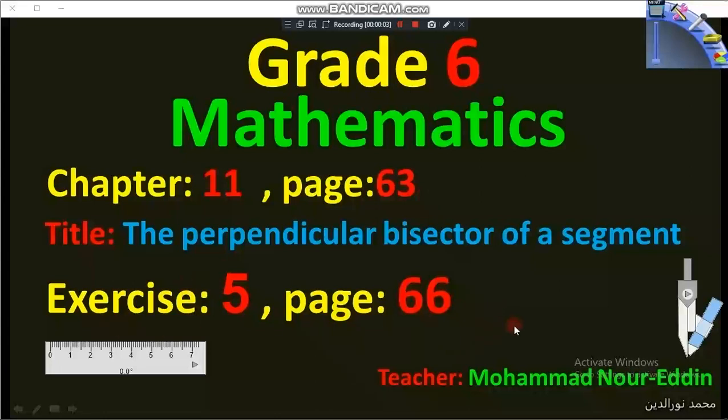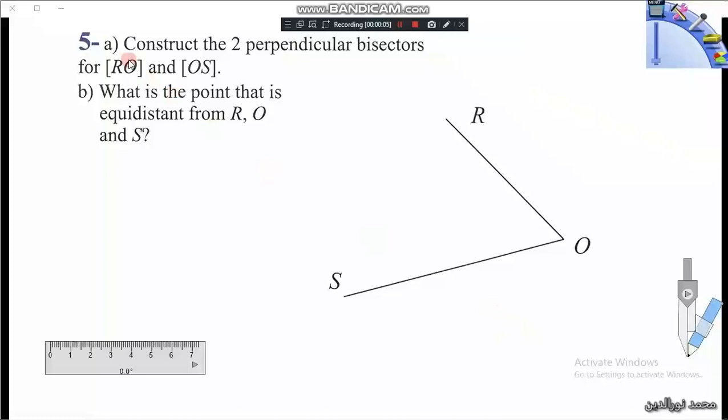Exercise 5 on page 66: Construct the two perpendicular bisectors of RO and OS. Here we have the two segments RO and OS, and we have to draw the perpendicular bisector of each segment.